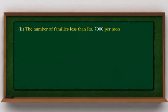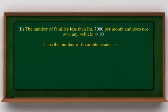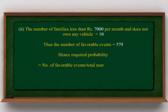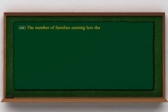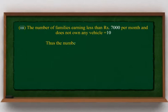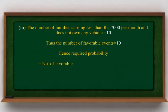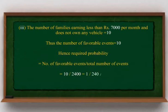The number of families earning ₹16,000 or more per month and owning exactly 1 vehicle is equal to 579. Thus, the number of favorable events is equal to 579; hence required probability equals 579 divided by 2400. The number of families earning less than ₹7,000 per month and owning no vehicle is equal to 10. Thus, the number of favorable events is equal to 10; hence required probability equals 646 divided by 2400.